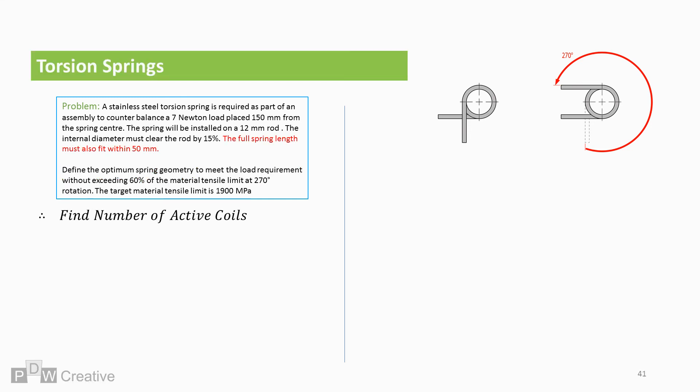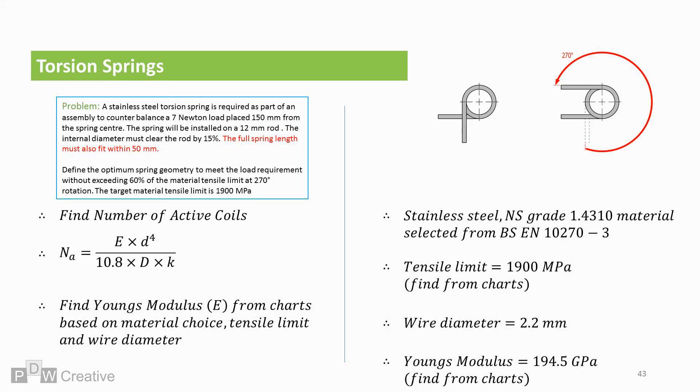Now, we need to calculate the spring length. To do this, we need to define the number of coils. Number of active coils, or Na, is Young's modulus times wire diameter to the power of 4 over 10.8 times mean diameter times spring stiffness. Let's just stop here for a second.